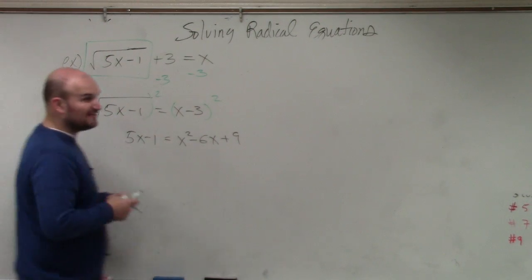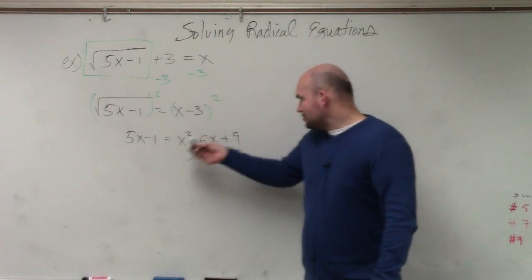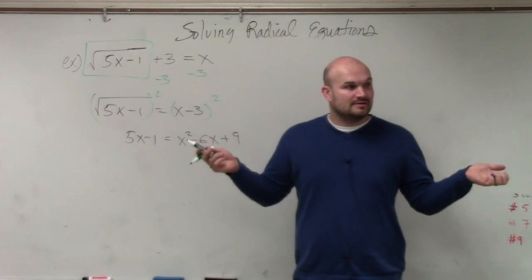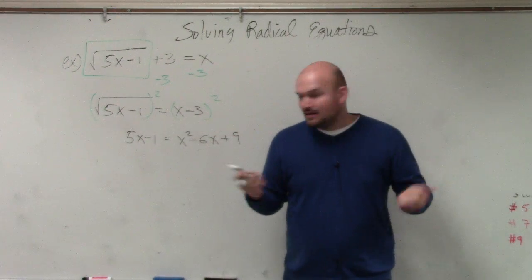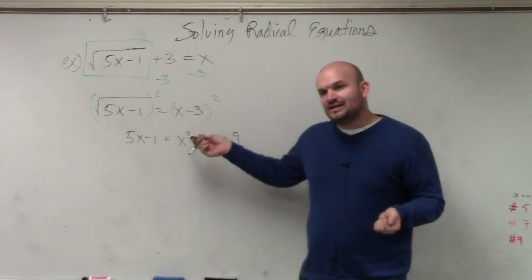Then you guys can see I have a lot of x's, right? It says solve for x. And I have 1, 2, 3 x's. Are they all linear? No. So I can't just get them on the same side, combine them, and solve. Two of them are linear, and one is quadratic.